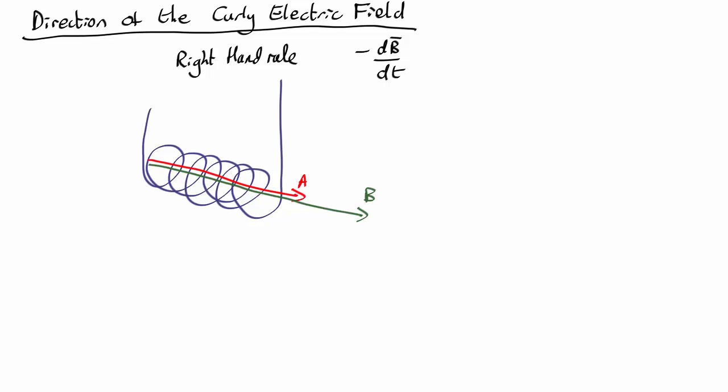So that means the change in the magnetic field is just dB, which is from there to there. So that's dB vector. So minus dB points that way, back again.